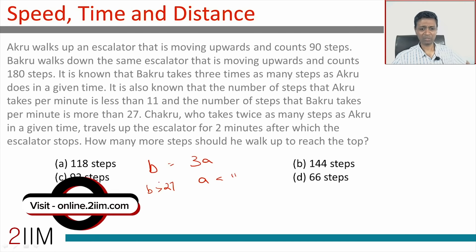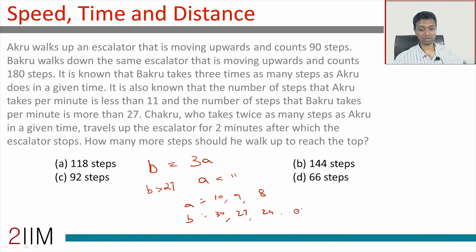Let's go step by step. We know Bakru is three times Akru. We know A is less than 11, B is greater than 27. Let's just figure out what A and B are. A is less than 11, so A could be 10, 9, 8. If A were 10, 9, 8, B would be 30, 27, 24 and so on. B is more than 27, so all this ruled out.